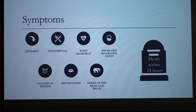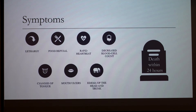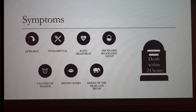Moving on to the symptoms: the onset of initial symptoms is sudden but not very specific, including lethargy, colic, diarrhea, and food refusal. As the disease progresses, signs associated with blood loss and shock appear, including tachycardia, decreased blood cell count, and in late stages, cyanosis of the tongue, mouth ulcers, and edema of the head and trunk. From onset of symptoms to death is about 24 hours.